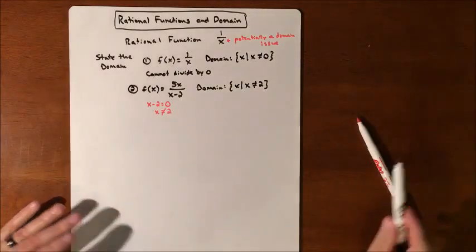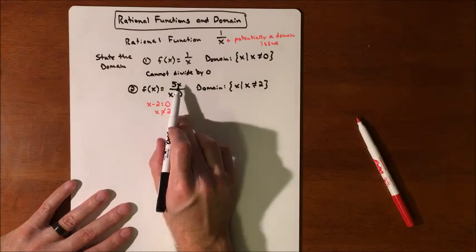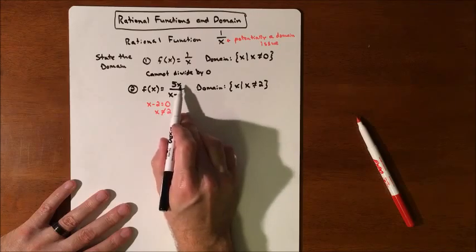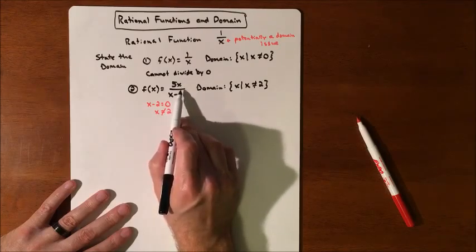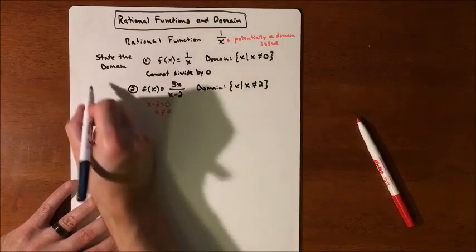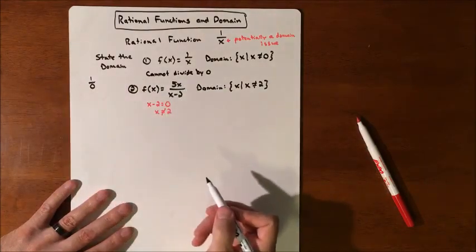We can plug in fractions, decimals, anything we want. Now the numerator can be zero. You can have zero divided by something, as long as it's not zero, and that's okay, because zero divided by anything is just zero. But the other way around is not okay. We cannot have something divided by zero. That's no good.